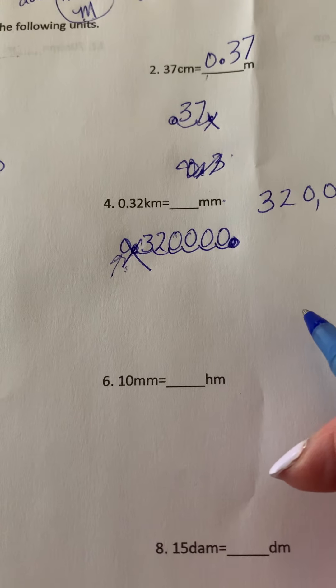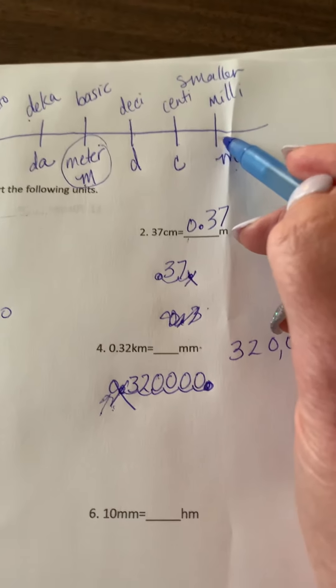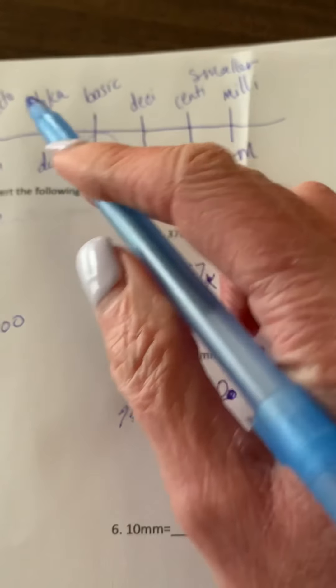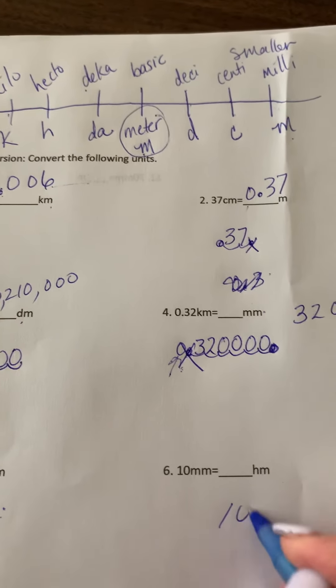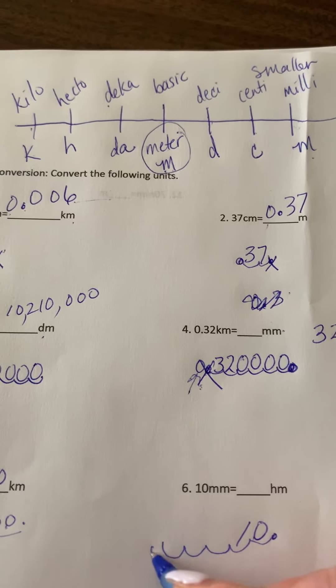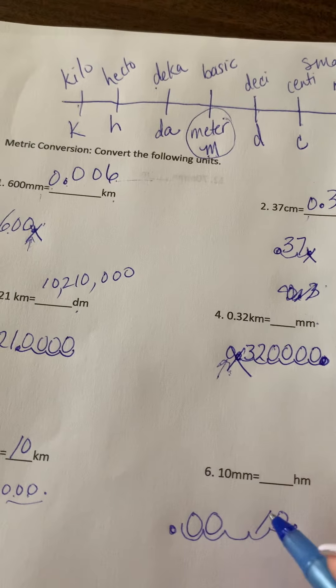10 millimeters going to hectometers. So here's millimeters. We're going to move to hectometers. We're going to move to the left: one, two, three, four, five places. So here's the original decimal. One, two, three, four, five. New decimal. Fill in the zeros.